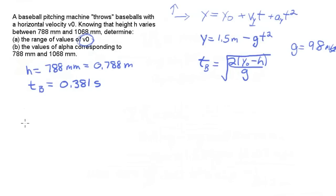Now, if h is at the other, the top end of the strike zone, if it's at 1068 millimeters, then the time to travel, it'll be less, and it'll be, if you plug it in, 0.2968 seconds. Okay. So we've got at one height, the corresponding time, at a second height, the corresponding time.